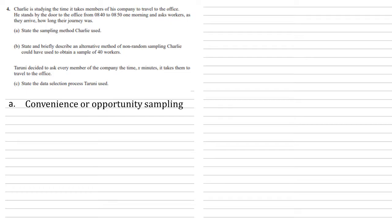For Part B, we need to state and briefly describe an alternative method of non-random sampling Charlie could have used to obtain a sample of 40 workers. One thing he could have done is use quota sampling. This would mean, for example, every ten minutes he asks four people. So rather than just taking every single person who comes along in a particular ten minutes, he's spreading his number of people out throughout the day, taking different ten minutes, four people in each one.